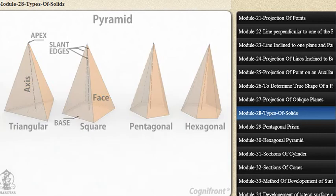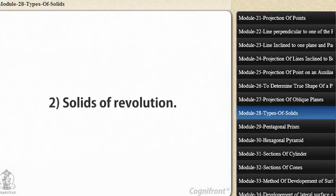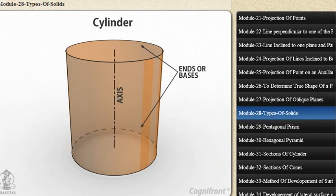Solids of revolution. Cylinder. A right circular cylinder is a solid generated by the revolution of a rectangle about one of its sides which remains fixed.